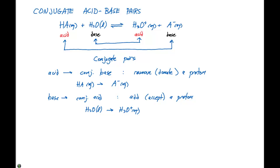So for example, if we have HCl, this is an acid. Our conjugate base is gonna be Cl-. If we have NH3, which is a base, the conjugate acid is going to be NH4+.